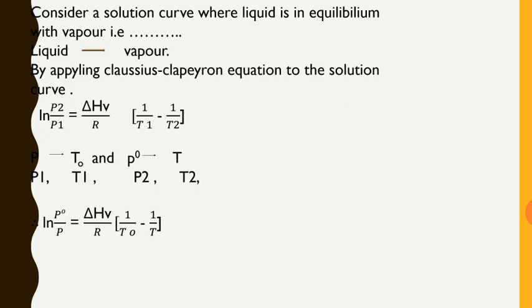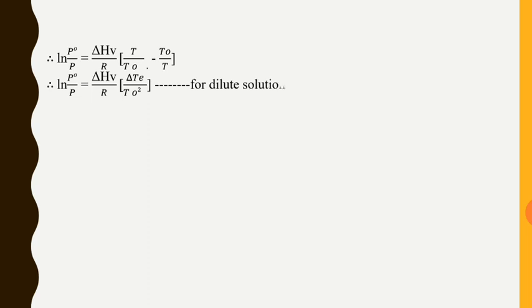Therefore, ln(P0/P) = (ΔHv/R) × (T − T0)/(T0·T). Now, T − T0 is ΔT, and the product T0 × T is approximately T0² for a dilute solution, since T0 is nearly equal to T. Therefore we substitute T0² in the denominator.